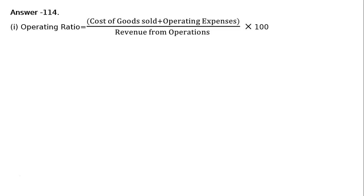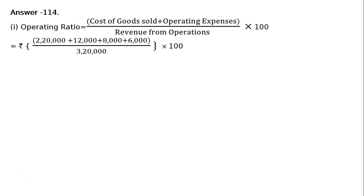Calculate operating ratio. Answer 114 part 1: Operating ratio is equal to cost of goods sold plus operating expenses, whole upon revenue from operations, into 100. That is Rs. 2,20,000 plus Rs. 12,000.